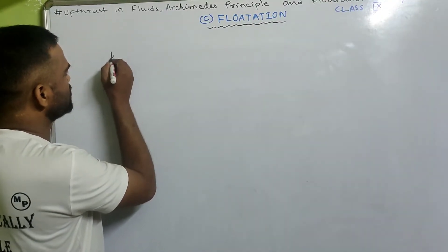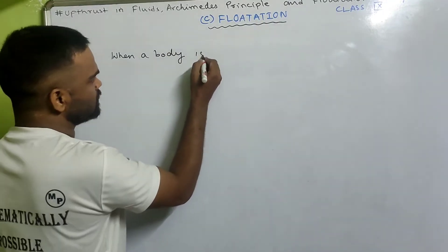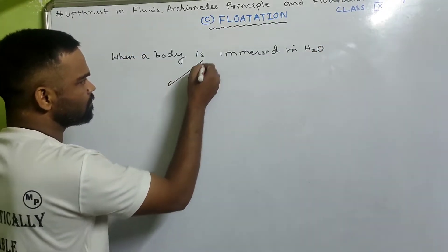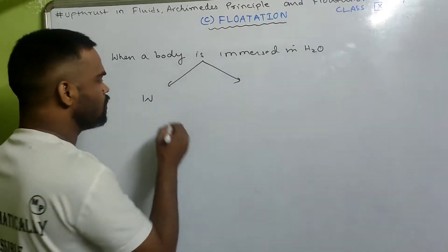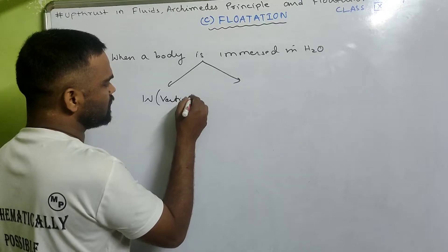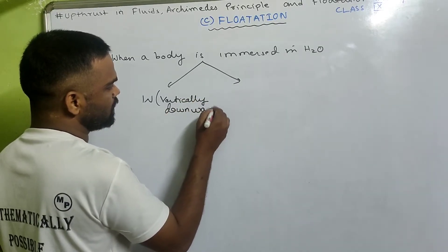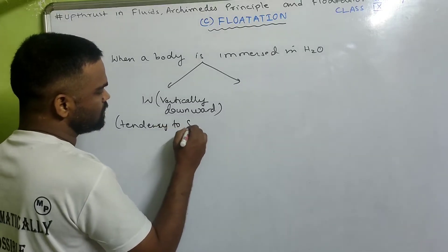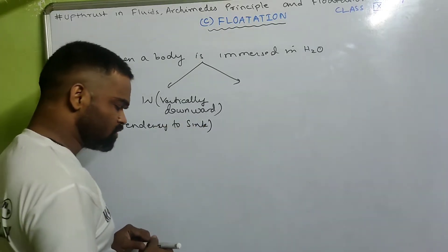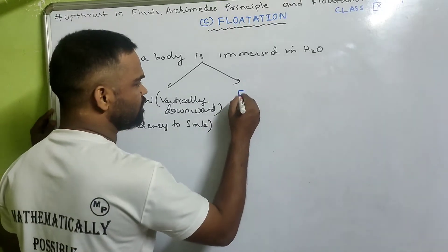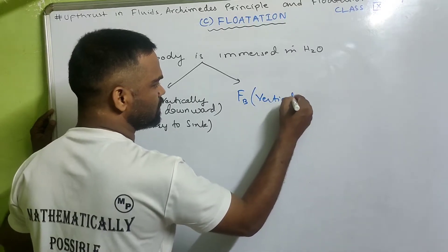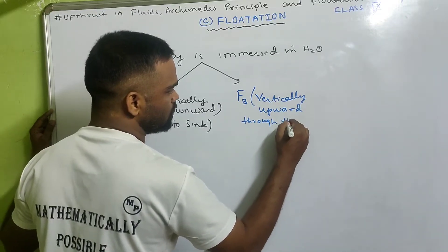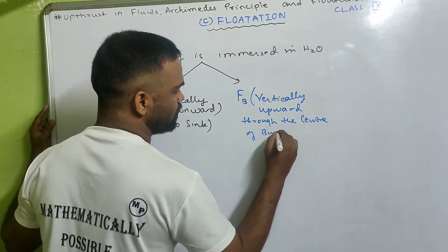When a body is immersed in water, then two forces act on it. One is the weight of the body, W, which acts vertically downward — which has a tendency to sink the body. And there is one more force, upthrust, FB, which acts vertically upward through the center of buoyancy.